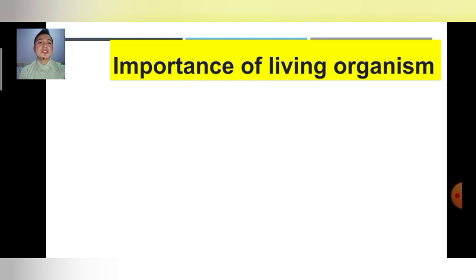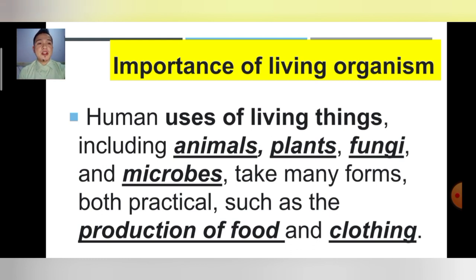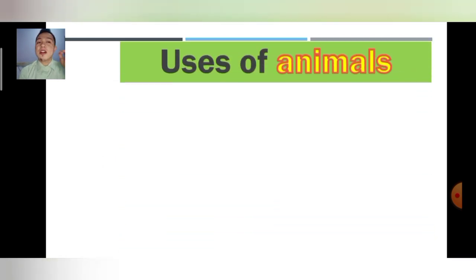Here, importance of living organisms. So living things or living organisms — what is the importance? Now let's talk about human uses of living things, including animals, plants, fungi, and microbes, which take many forms of both practical uses such as the production of food and clothing. So those are the uses of living things to human beings. Now today we will be talking first about the uses of animals.